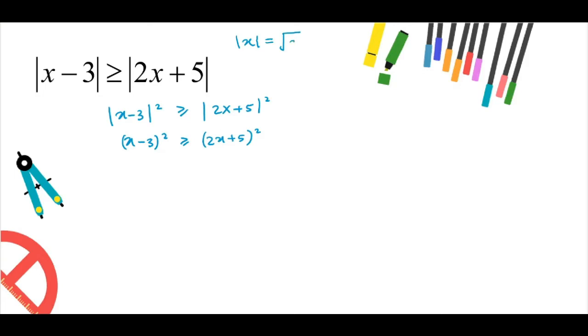From the previous video, we know that absolute value of x can be written as square root of x squared. So when we square the modulus, it will give us only x squared. By applying this, absolute value of x minus 3 squared will be x minus 3 squared, and absolute value of 2x plus 5 squared will be 2x plus 5 squared.